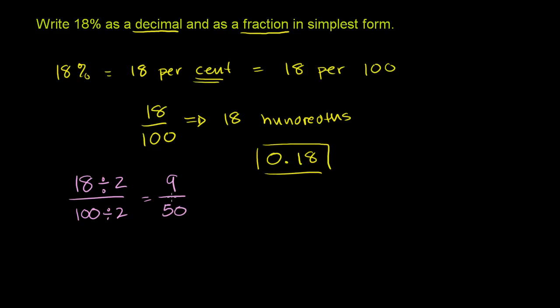And I don't think these guys share any common factors. 50 is not divisible by 3, 9 is only divisible by 3 and 1 and 9. So this is the fraction in simplest form. So we have 18% is the same thing as 0.18, which is the same thing in simplest form as 9 fiftieths.